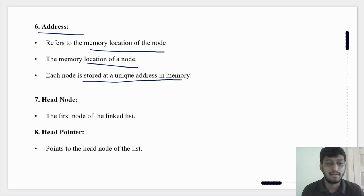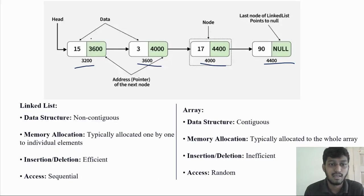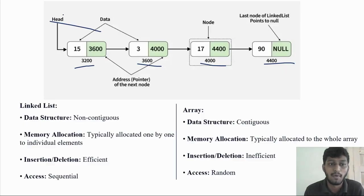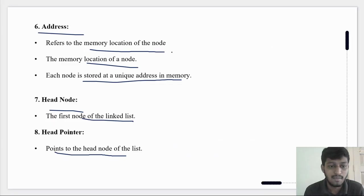Address refers to the memory location of the node. Head node is the first node of the linked list. The head pointer points to the head node of the list. The last node has a null pointer, indicating the end of the linked list. So head node equals the first node of the linked list.